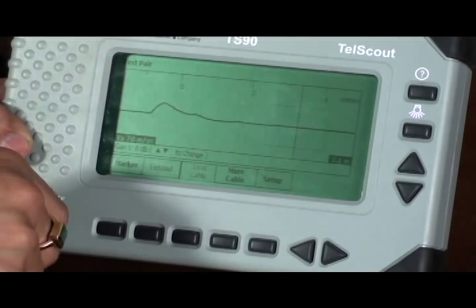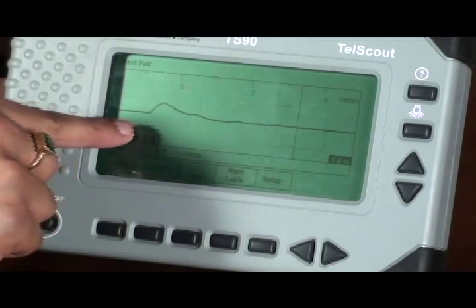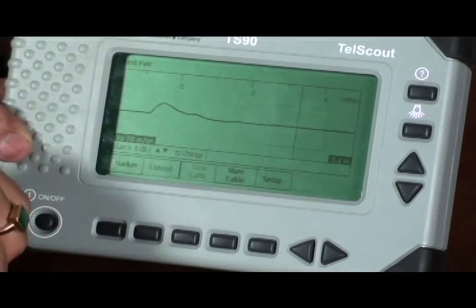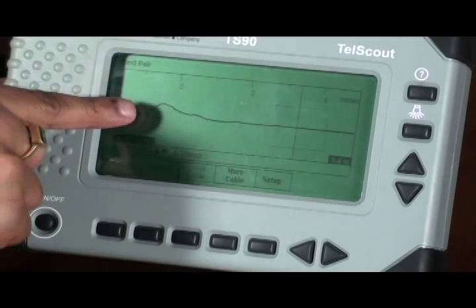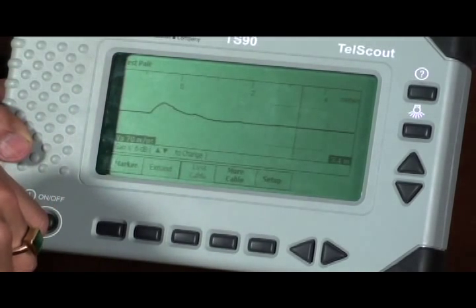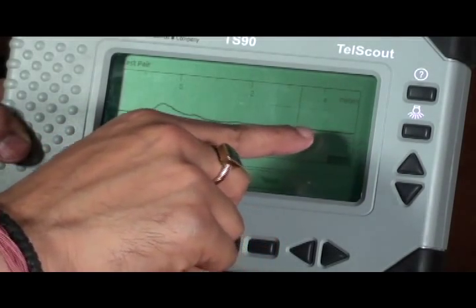This sort of graphical representation shall appear. The initial spurt upwards in the graph represents the start of the cable at zero meters. Thereafter, it shows a straight line indicating that the cable is OK.